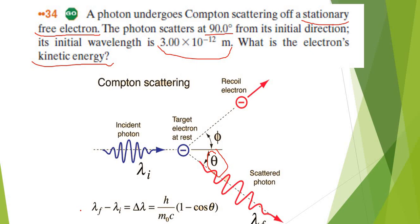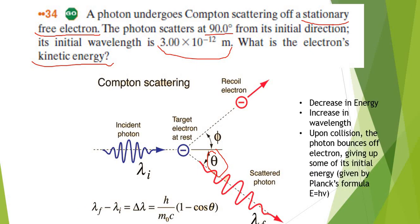Okay, this is basically the main formula of the Compton scattering. The thing you need to know about the Compton scattering is that it decreases in energy. At the same time it wants to conserve the momentum so that it increases in wavelength. If you want to check your final answer, you're going to have to find the increment in wavelength. So upon collision, it gives some of its initial energy given by Planck's formula.